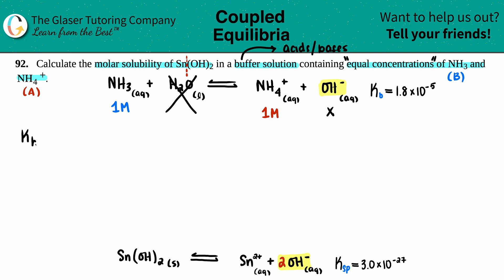Let's go for it. Kb equals—just a refresher—products over reactants. In this case, it would be NH4+ times OH- divided by NH3.